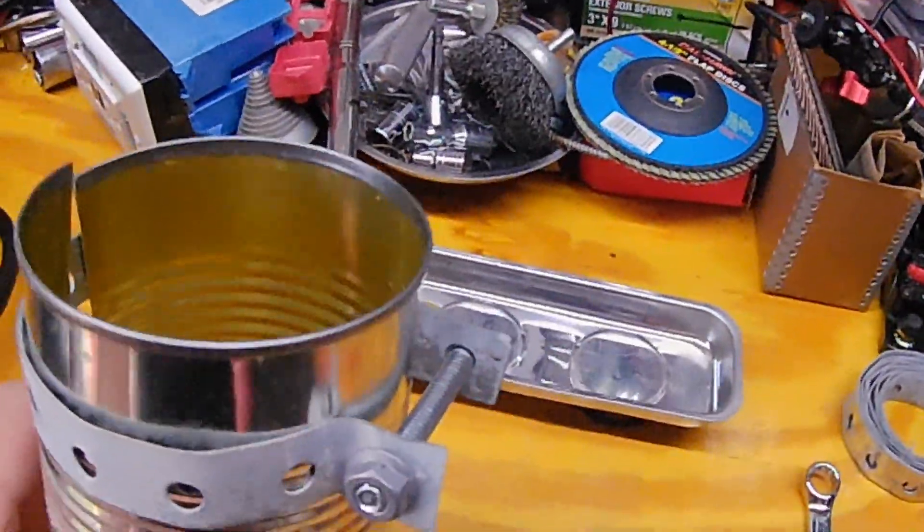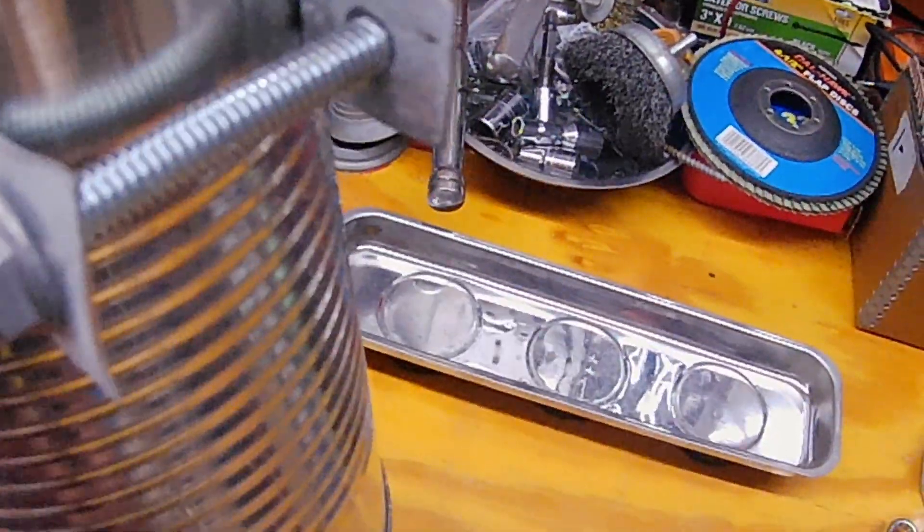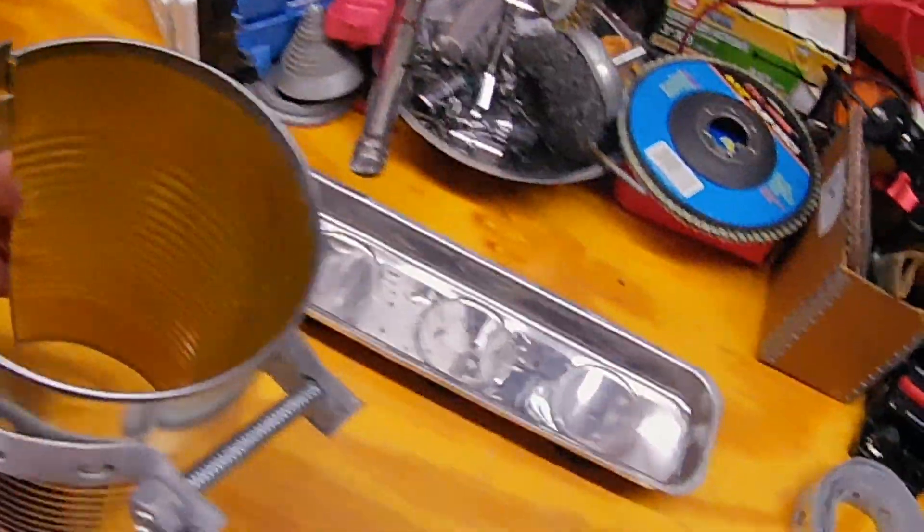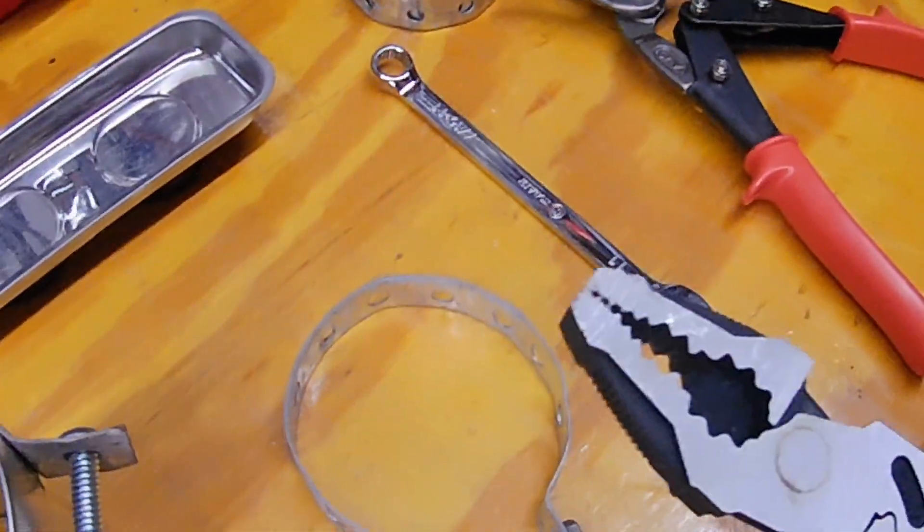Make sure it goes around the can because it's going to have to tighten up. If it tightens up and still isn't tight enough, you might have to just go to the next hole over, it's no biggie. When I go up to the truck, I'm going to bring these pliers in case I have to do that.